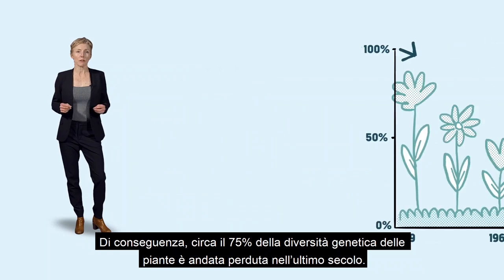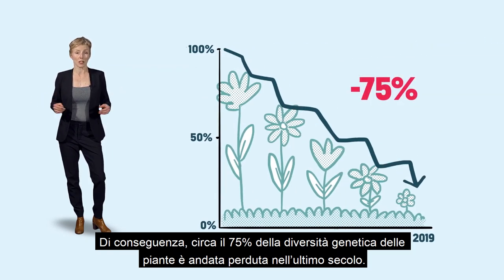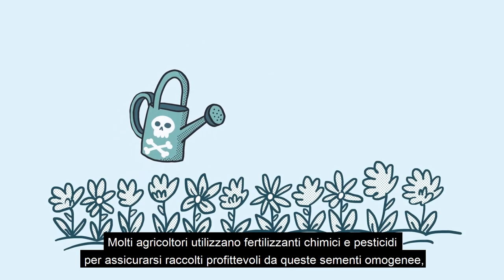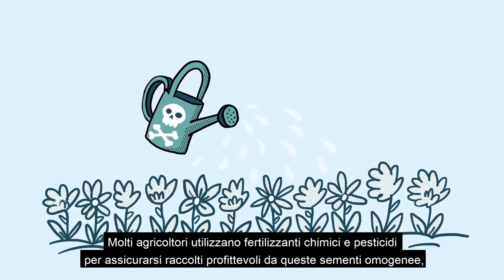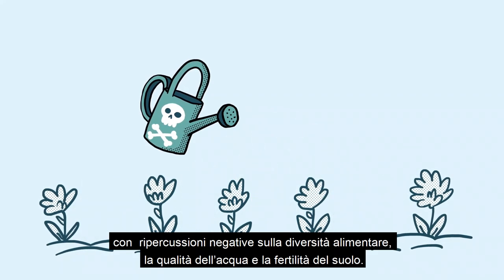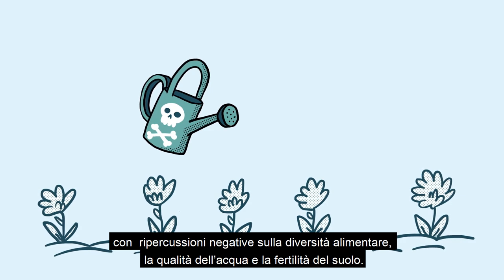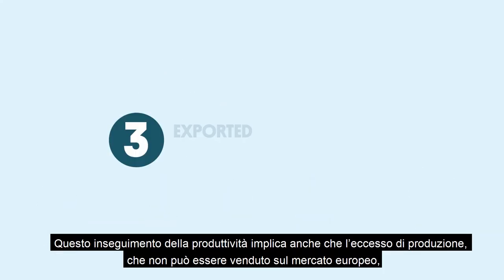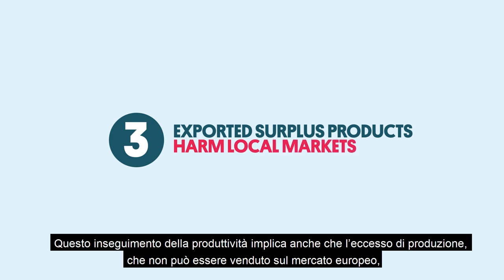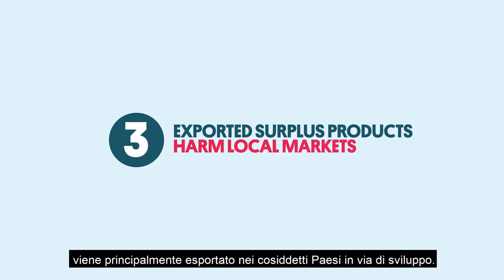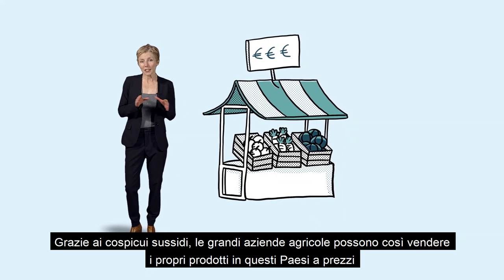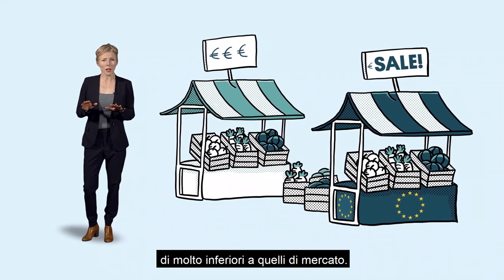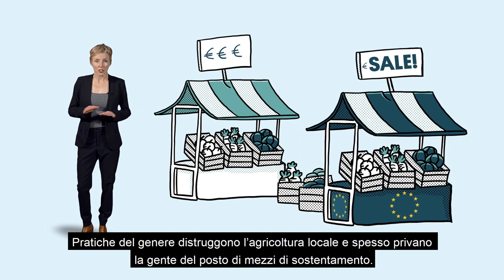Consequently, about 75% of plant genetic diversity has been lost in the past 100 years. Many farmers use chemical fertilisers and pesticides to ensure profitable harvests from these homogenous seeds, which leads to a loss of food diversity and a reduction in water quality and soil fertility. Chasing productivity also means that surplus products that cannot be sold on the EU market are instead mainly exported to so-called developing countries. Through high subsidies, large industrial agro-enterprises can sell their goods within these countries at way below the market value, destroying local farming and often ruining entire livelihoods for local people.